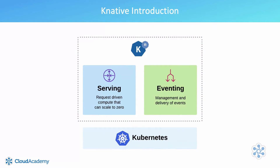Knative is a Kubernetes-based serverless framework which originated out of Google. Over time, additional support and contributions have been made by other vendors such as Red Hat, IBM, and Pivotal.